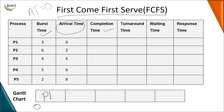At time zero, the first process that has arrived is P1. Its burst time is three milliseconds, so the CPU is given to P1 for three milliseconds. Once done, at three milliseconds, we check which process has arrived next — P2 arrived at two milliseconds. So we select P2 for scheduling. Its burst time is six, so three plus six gives us nine milliseconds.